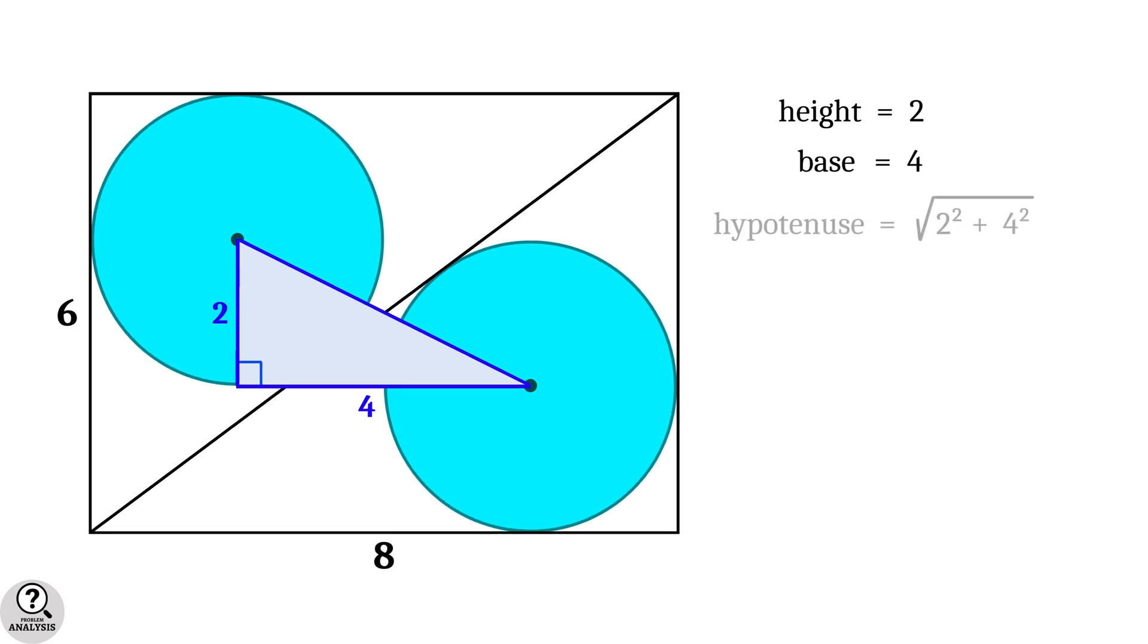This gives the hypotenuse as √(2² + 4²) = √(4 + 16) = √20 = 2√5 units.